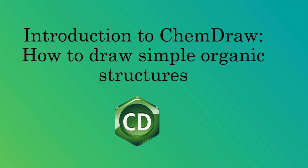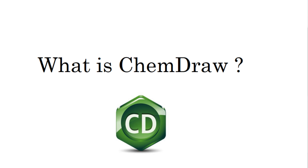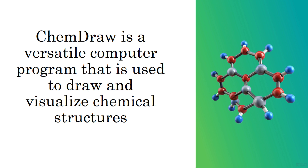Welcome to this channel where we will be discussing how to use ChemDraw. ChemDraw is a computer software that is used to draw and visualize chemical structures. It is also used to show chemical reactions. ChemDraw is a versatile tool and if you are working on any project related to chemistry, it's likely that you will use ChemDraw, and that's why it's important you listen carefully.